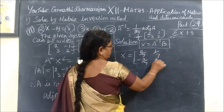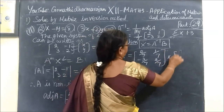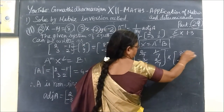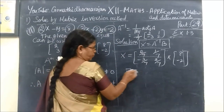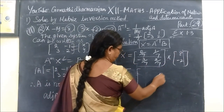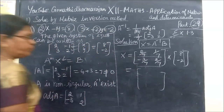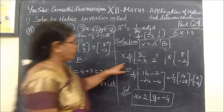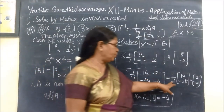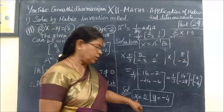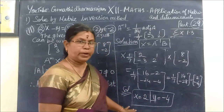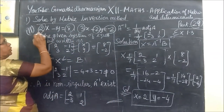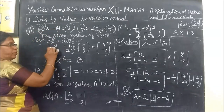So X equals A inverse B. The determinant is 7. A inverse is 1/7 times the matrix: 2/7, 1/7, minus 3/7, 2/7, into B which is 8, minus 2. First row first column, second row first column — we do the calculation. X equal to 2, then Y equal to minus 4.